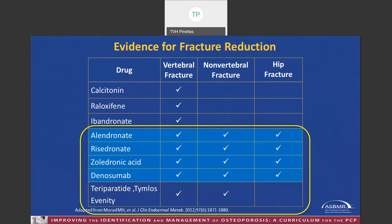This table gives an overview of pharmacologic therapies based on evidence of various strengths. The first three drugs — calcitonin, raloxifene, and ibandronate — reduce the risk of vertebral fracture, but not of non-vertebral or hip fracture; for this reason, we do not recommend these as primary therapy. The agents in light blue are all effective in reducing vertebral fracture, non-vertebral fracture, and hip fracture, and all work by blocking resorption.